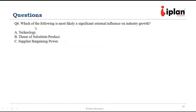Question number six: which of the following is most likely a significant external influence on industry growth? Technology is one of the external factors that can affect industry growth. Threat of substitute products or supplier bargaining power are not external factors — they are part of Porter's Five Forces. So A is the right answer.